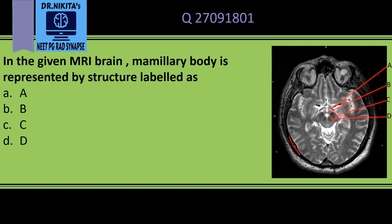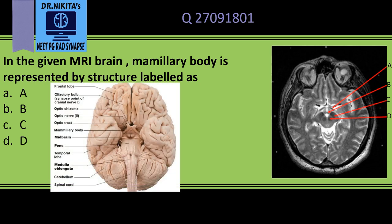This is a T2-weighted MRI — T2-weighted because the CSF here is white, so water is white on T2. Now if we have a look at the neuroanatomy...